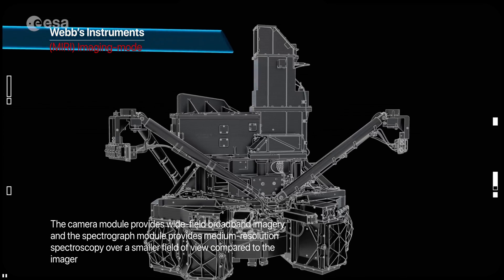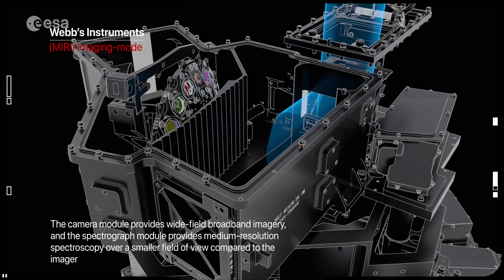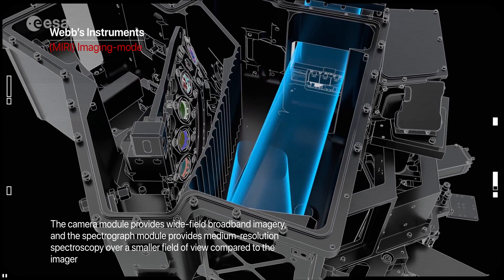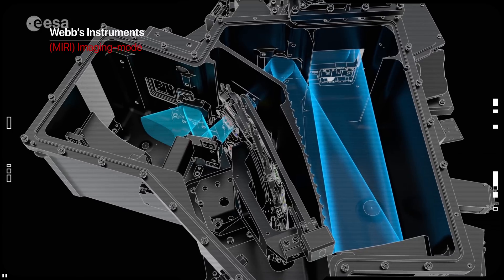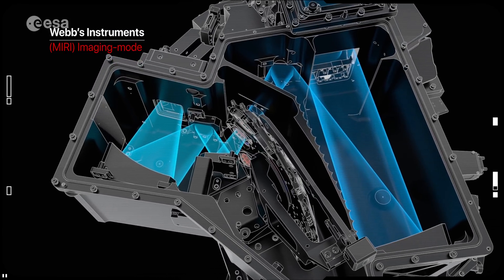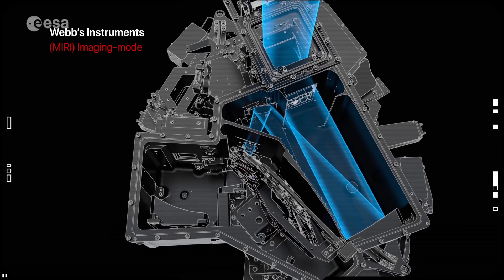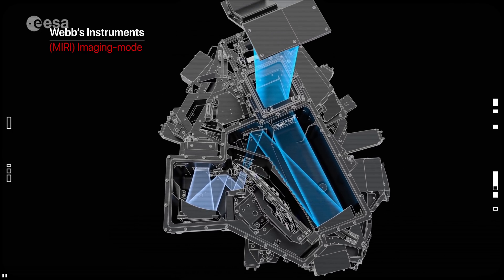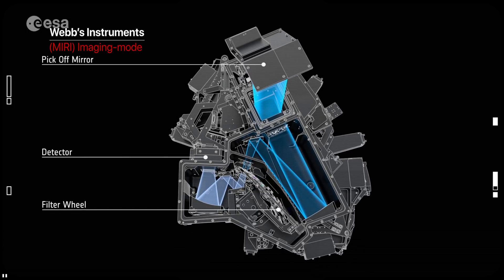Because MIRI sees farther into the infrared than the other instruments, it has to be kept even colder than its counterparts. Webb's two-stage cryocooler works like the world's most effective refrigerator. The first stage brings MIRI's temperature down to 18 kelvins and the second stage brings the MIRI detectors to below 7 kelvins. That's just 7 degrees above absolute zero, the theoretical temperature at which all motion freezes, even the momentum of atoms.